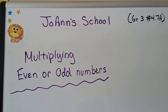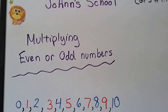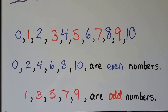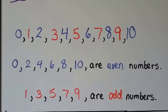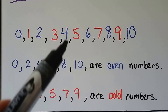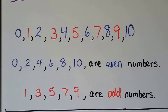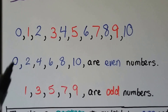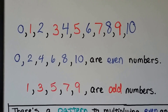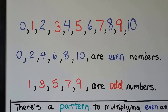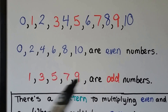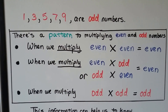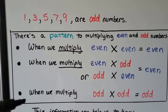We're going to talk about multiplying even or odd numbers. Remember your even or odd numbers — all the ones in blue are even and all the ones in red are odd. Zero, two, four, six, eight, ten — see how they skip the odd numbers. The odd numbers skip the even ones; it's like they're taking turns. Remember that zero is grouped in with the even numbers. There's a pattern to multiplying even and odd numbers, and there are three things you need to remember.